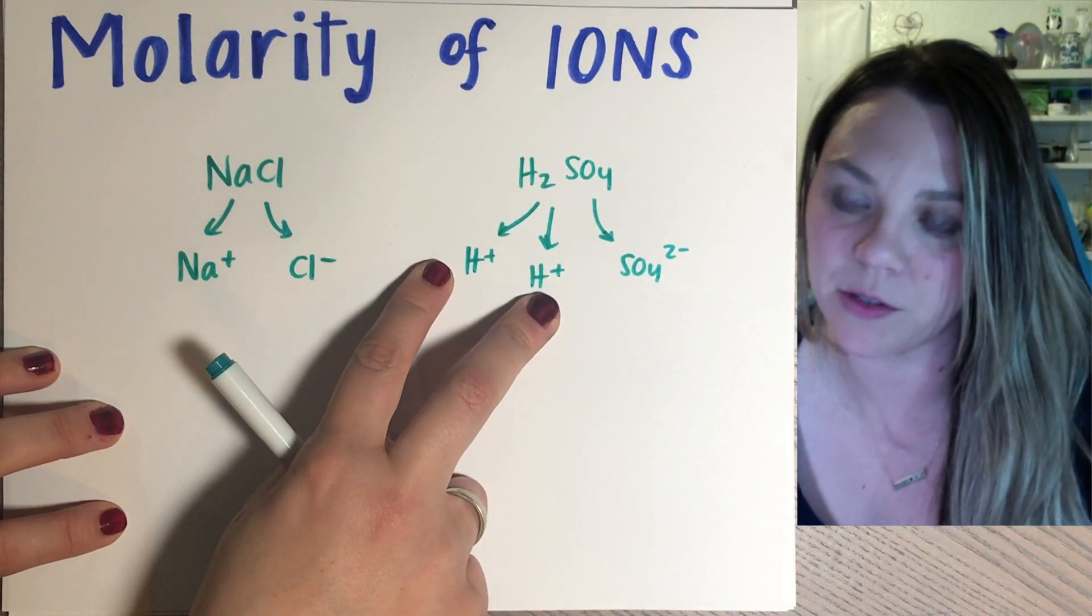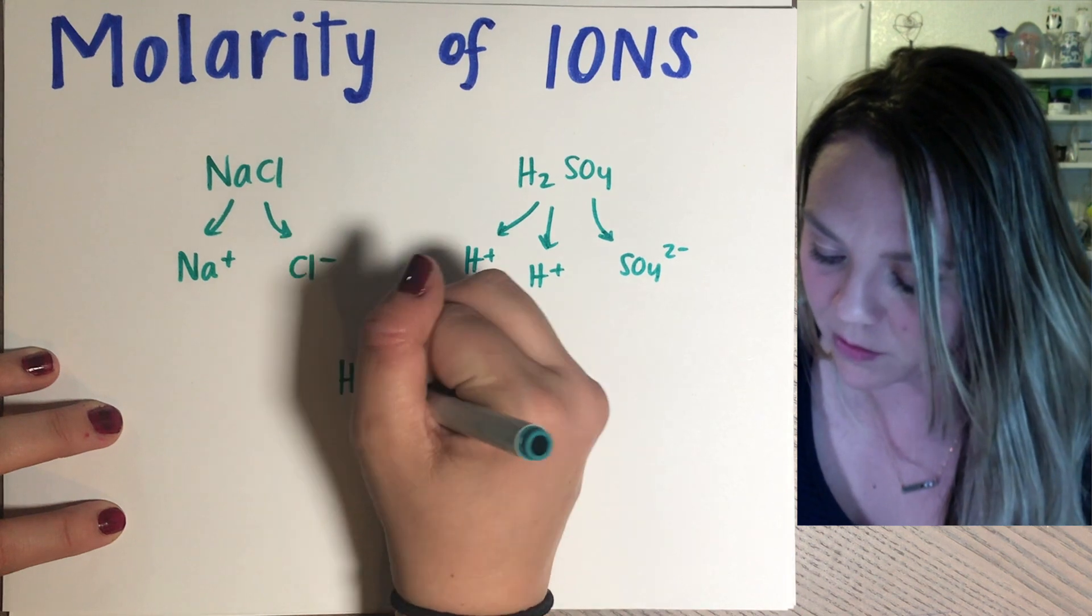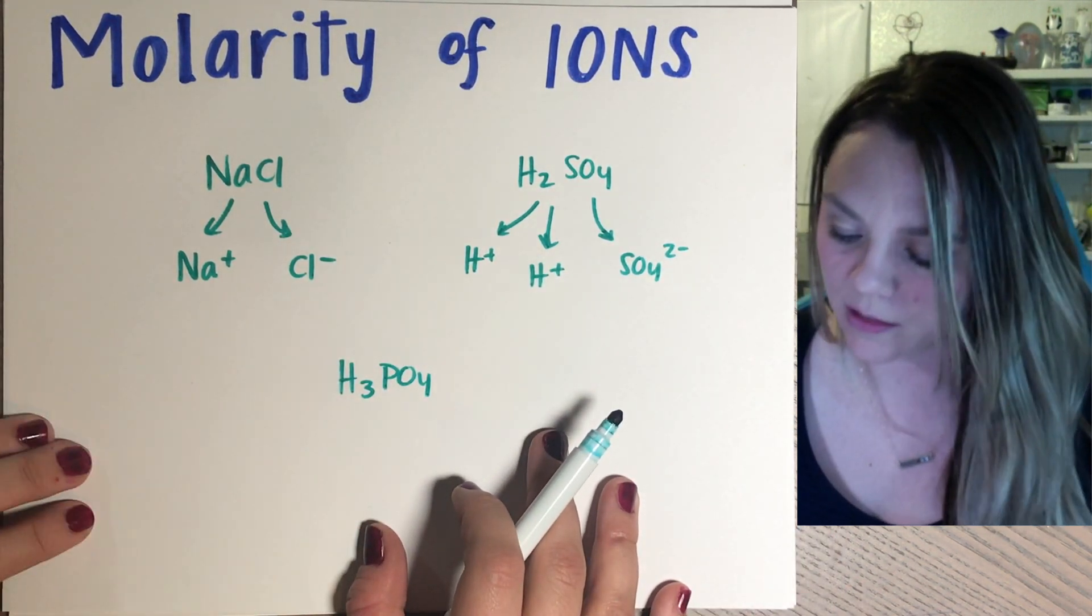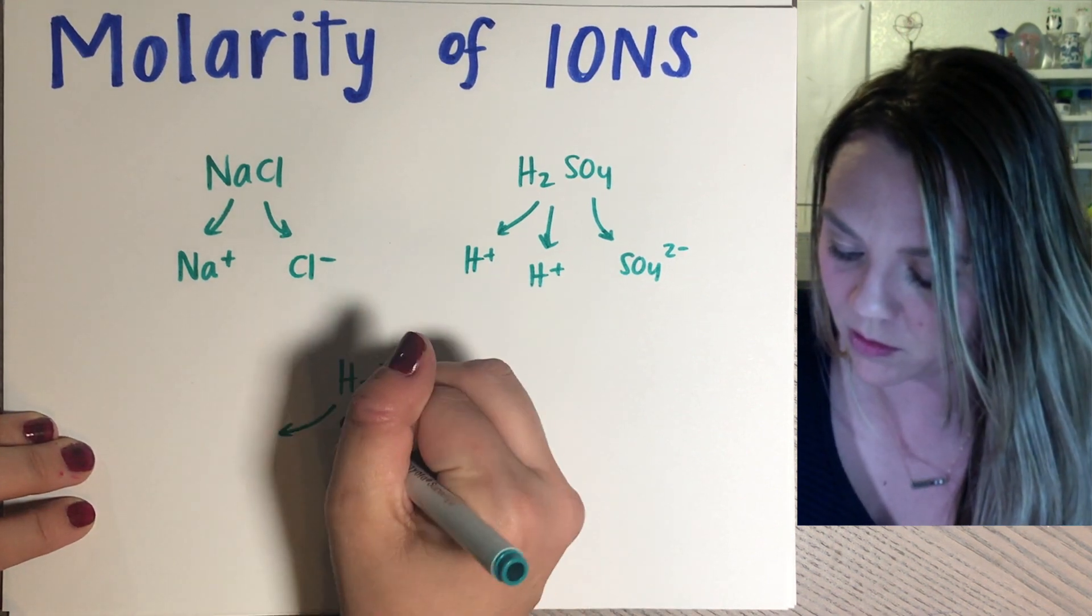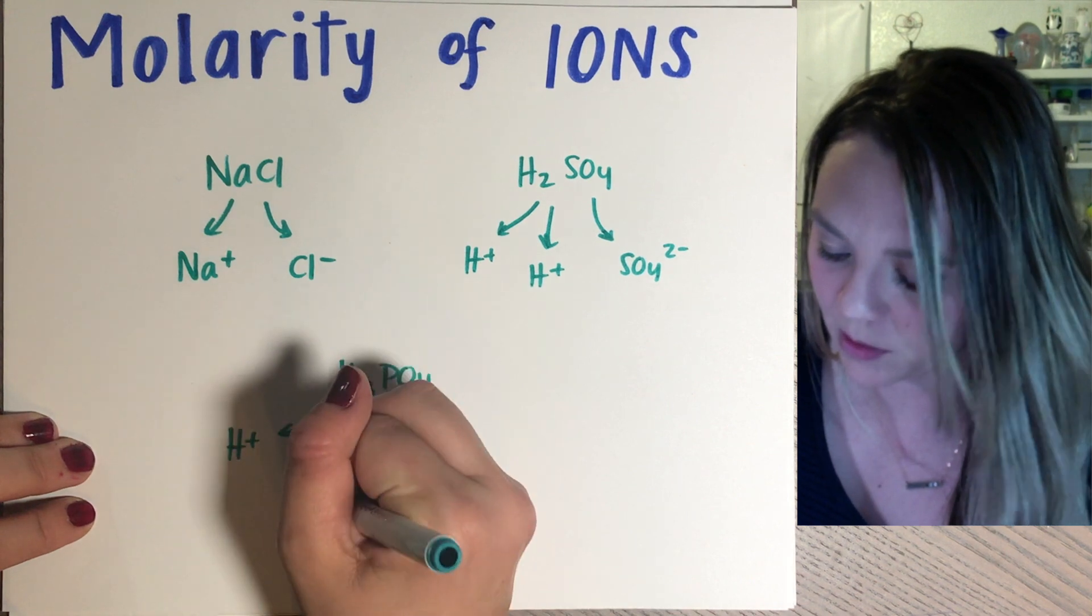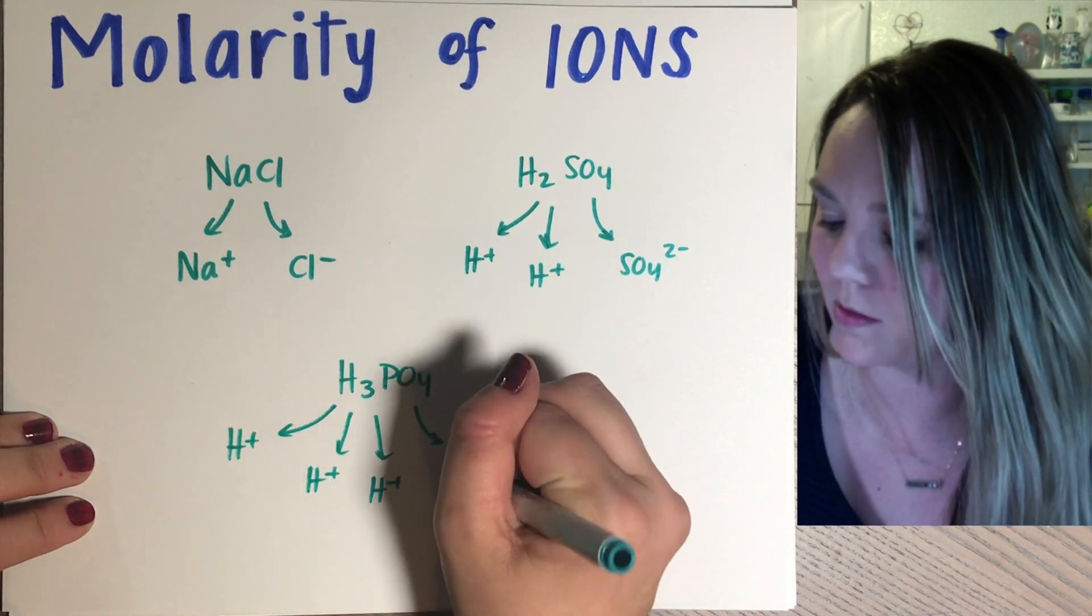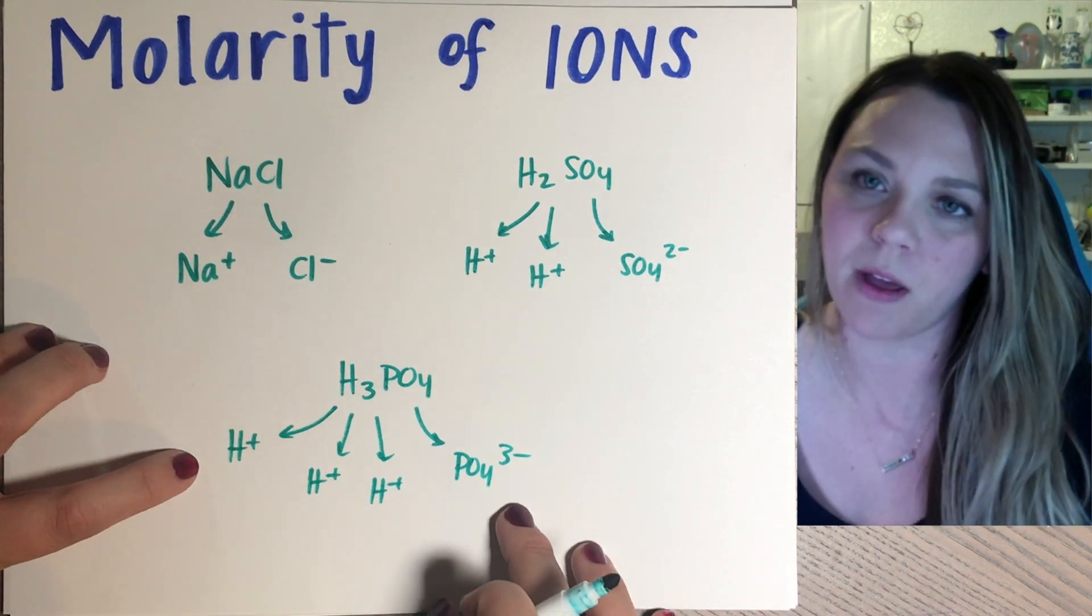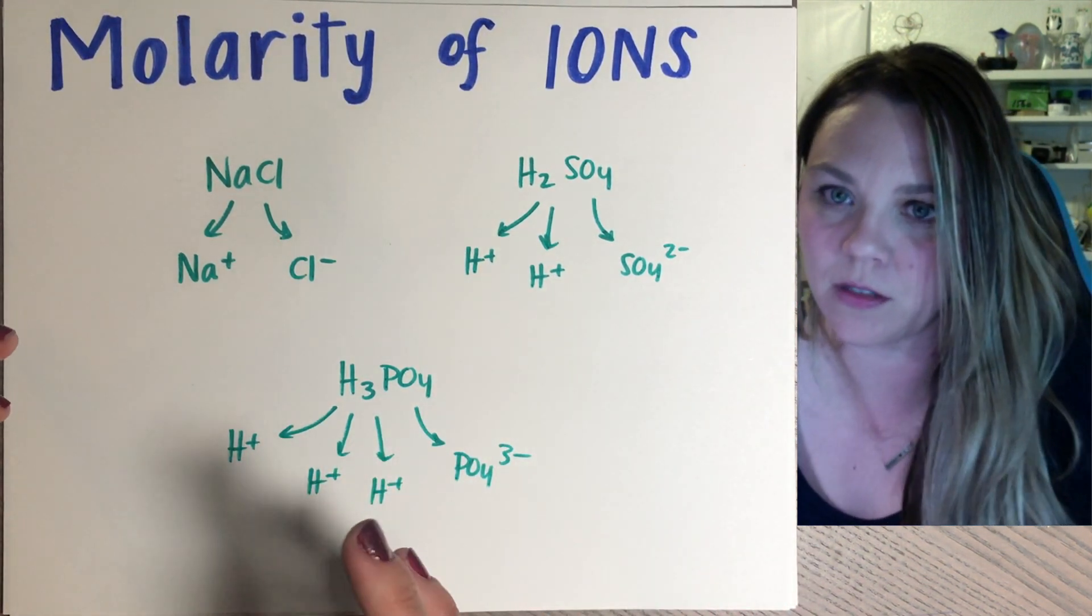You could also have a phosphoric acid, so you have H3PO4. So this breaks up into H+, H+, H+, PO4 3-. Where you're having a different amount of each ion within the solution.